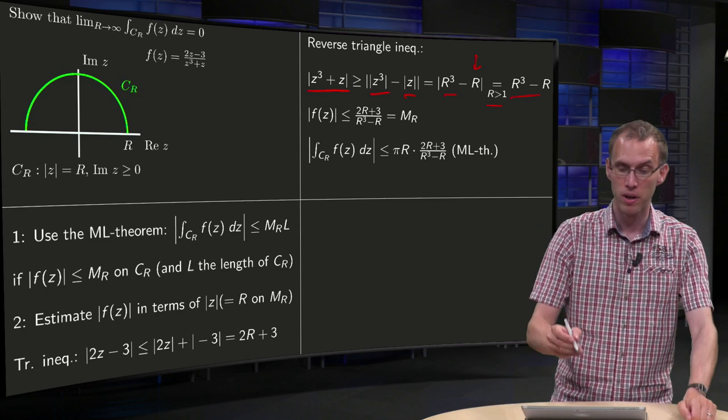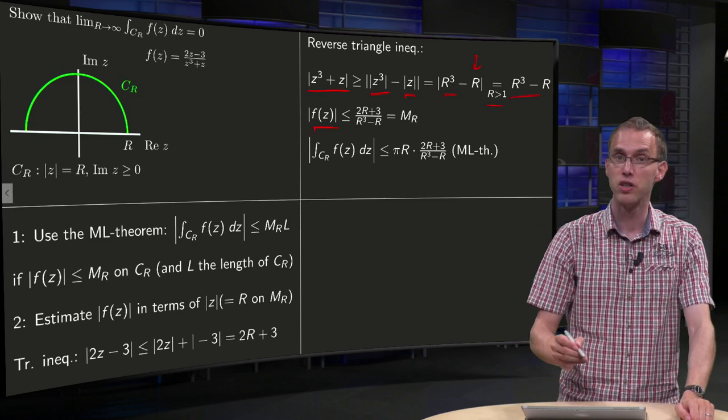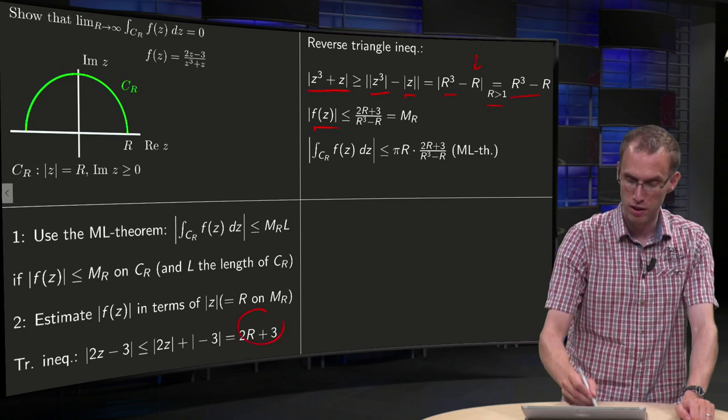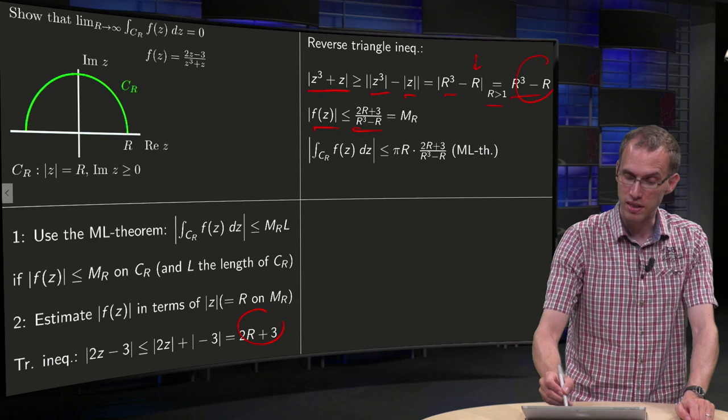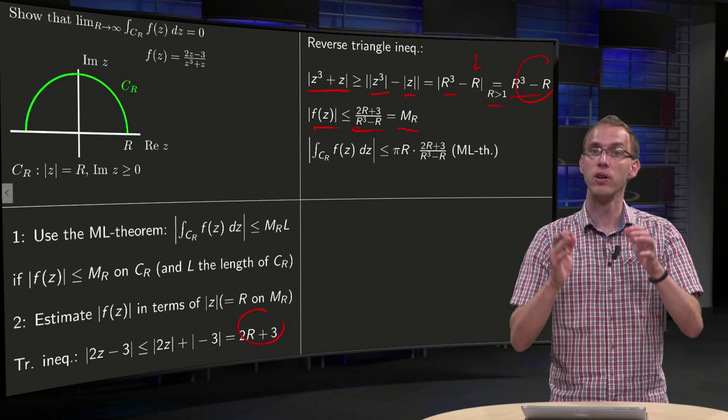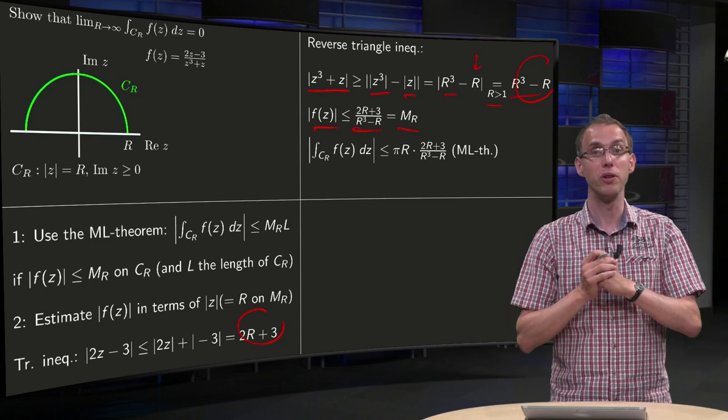So then we know that the norm of f(z) is smaller than or equal than this part divided by that part, like this, and we set this equal to MR and this only holds on CR.